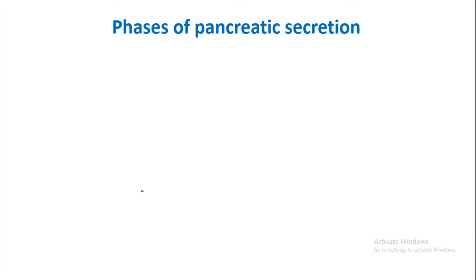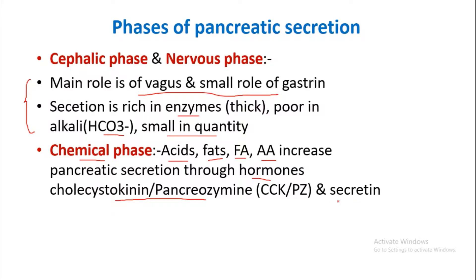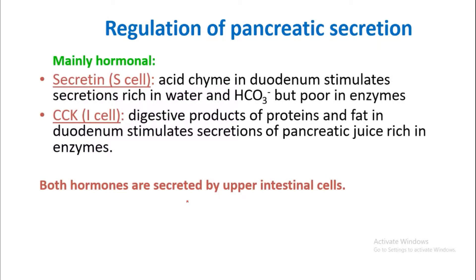Phases of pancreatic secretions: First, the cephalic phase and nervous phase — the main role is of the vagus nerve with a small role of gastrin. Conditioned and unconditioned reflexes operate here, producing secretions that are rich in enzymes but poor in alkali (HCO3⁻) and small in quantity. Second, the chemical phase — acids, fats, fatty acids, and amino acids increase pancreatic secretions through the hormones cholecystokinin (also known as pancreozymin) and secretin.